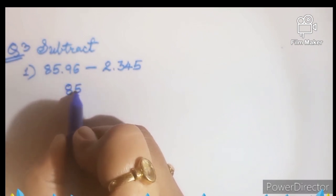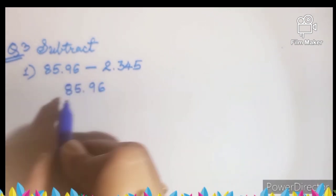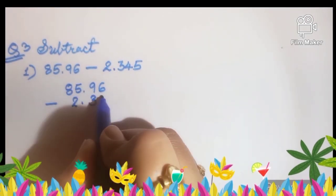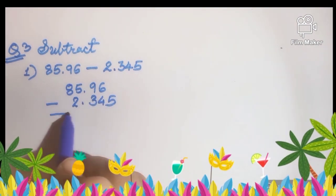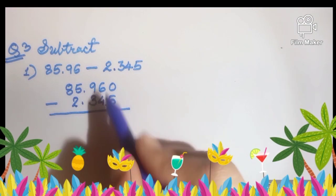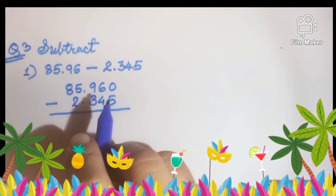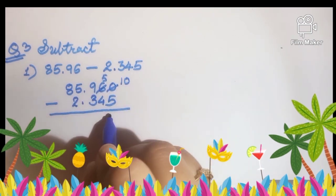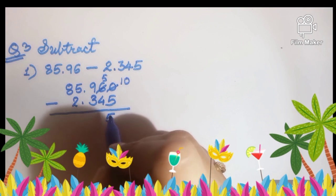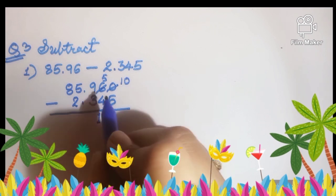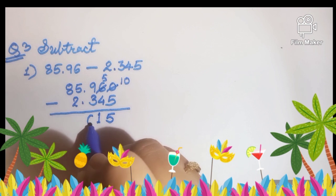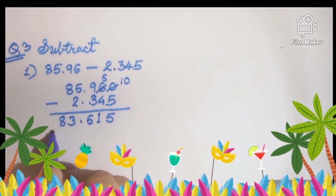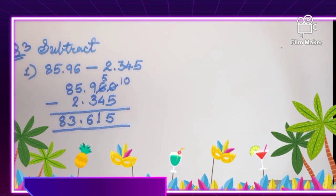Now subtract. Question number 1: 85.96 minus 2.345. We write the same place values one under the other. I am putting 0 here since no number is given. Borrow 1 — it becomes 10 minus 5, that is 5. Then 5 minus 4 is 1. Then 9 minus 3 is 6. Point as it is. 5 minus 2 is 3. 8 stays as it is. So the answer is 83.615.